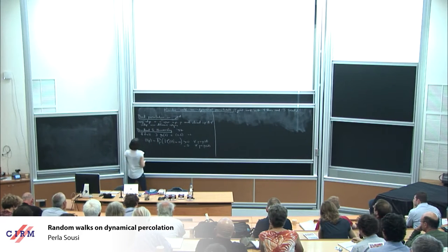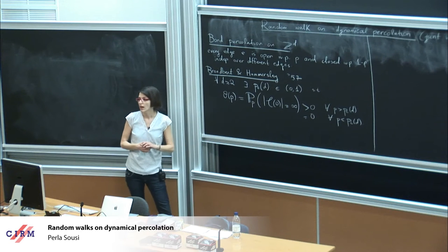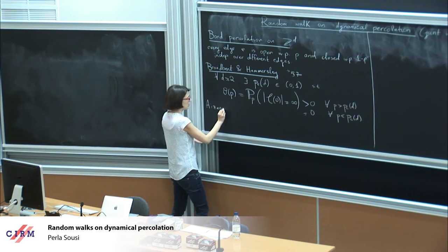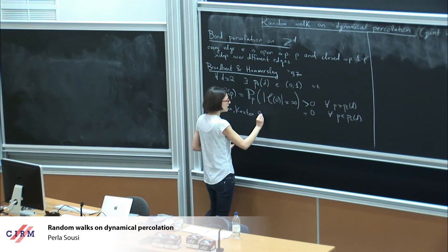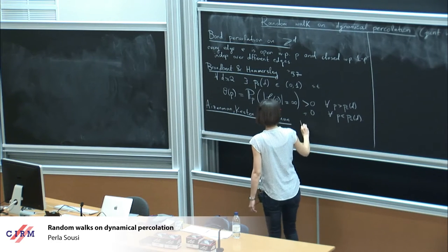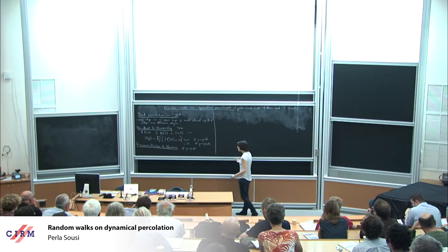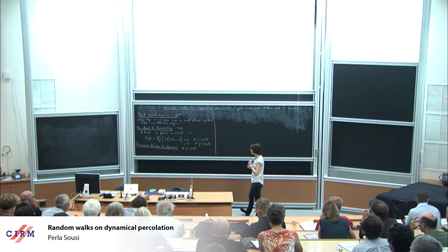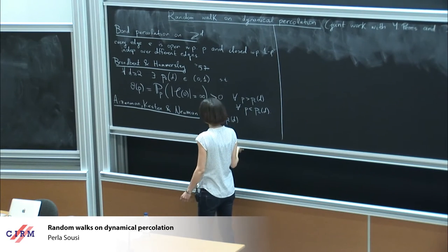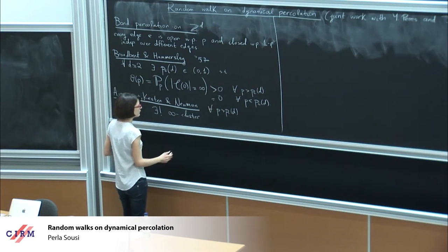What they showed is that when p is bigger than this critical parameter, this probability is positive, and it equals 0 below p_c. Then Aizenman, Kesten, and Newman showed that above the critical probability, using ergodicity arguments, one can show there is always an infinite cluster above p_c, and moreover this infinite cluster is actually unique — there exists a unique infinite cluster.